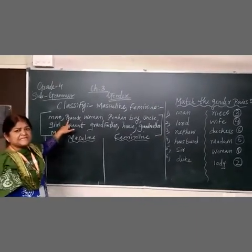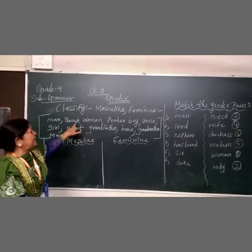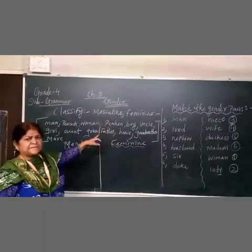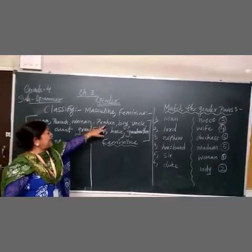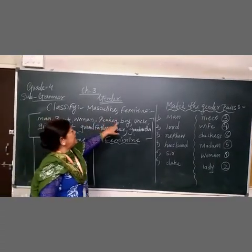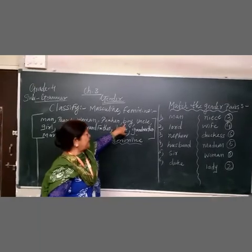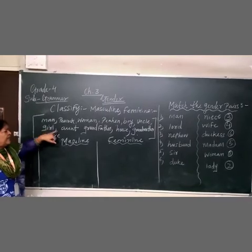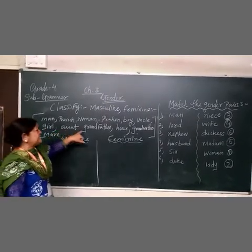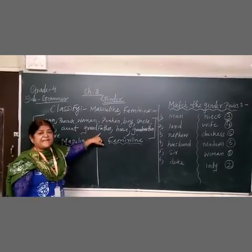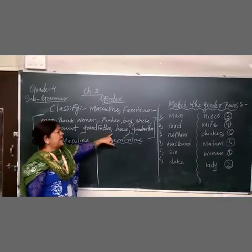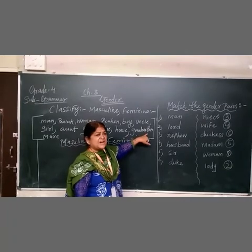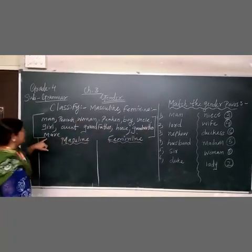Number 2: peacock. Number 3: woman. Number 4: peahen. Also: boy, uncle, girl, aunt, grandfather, horse, grandmother, mare. I will explain the spelling in detail.